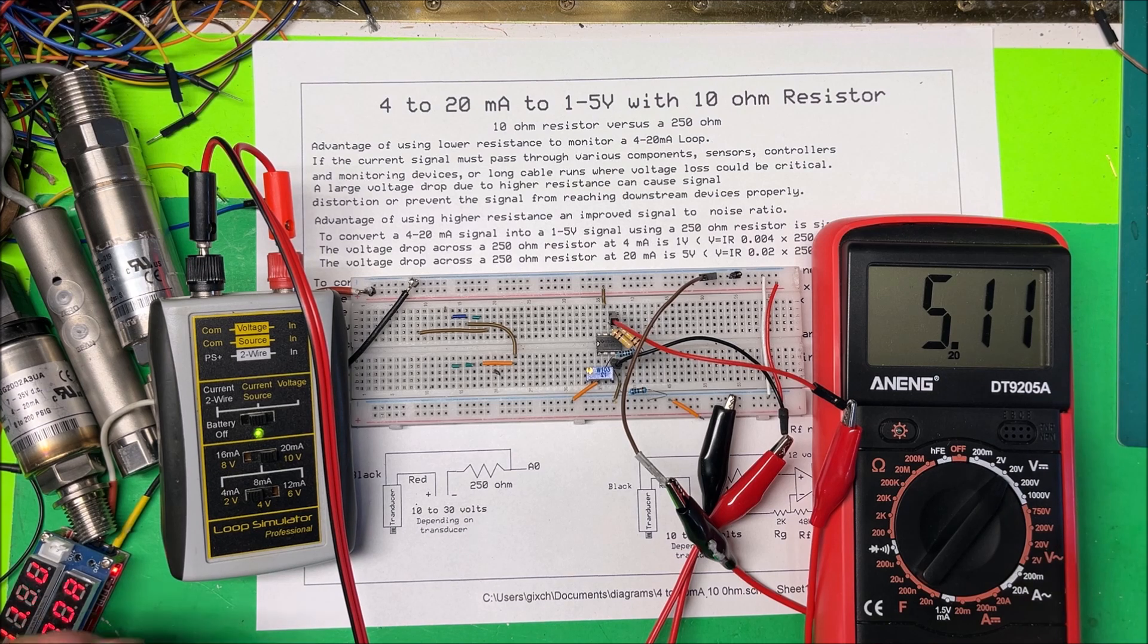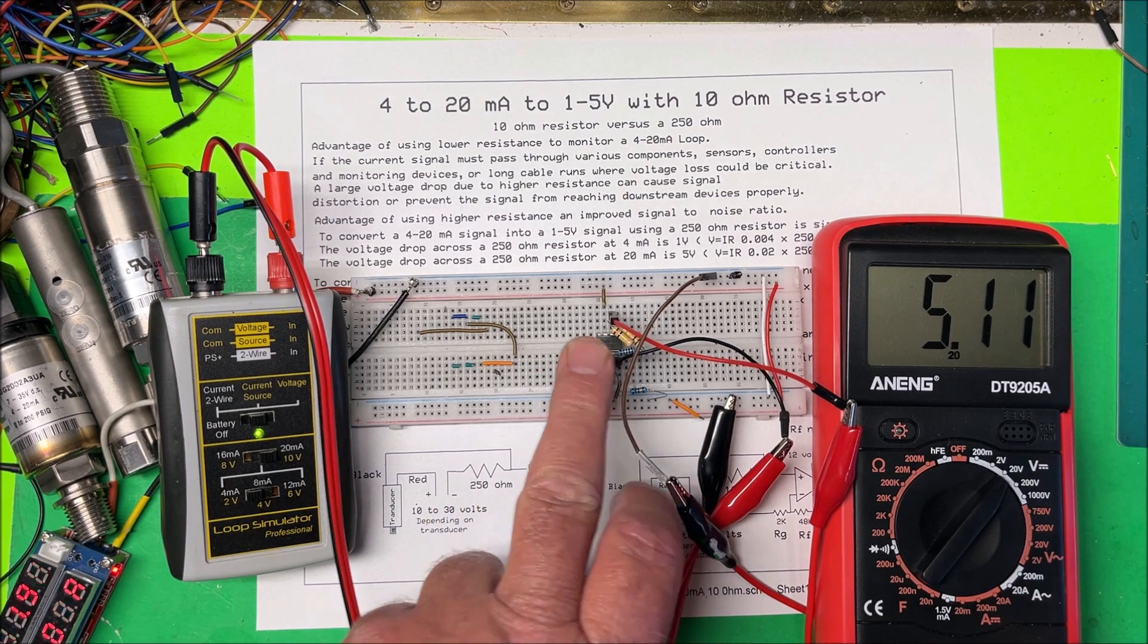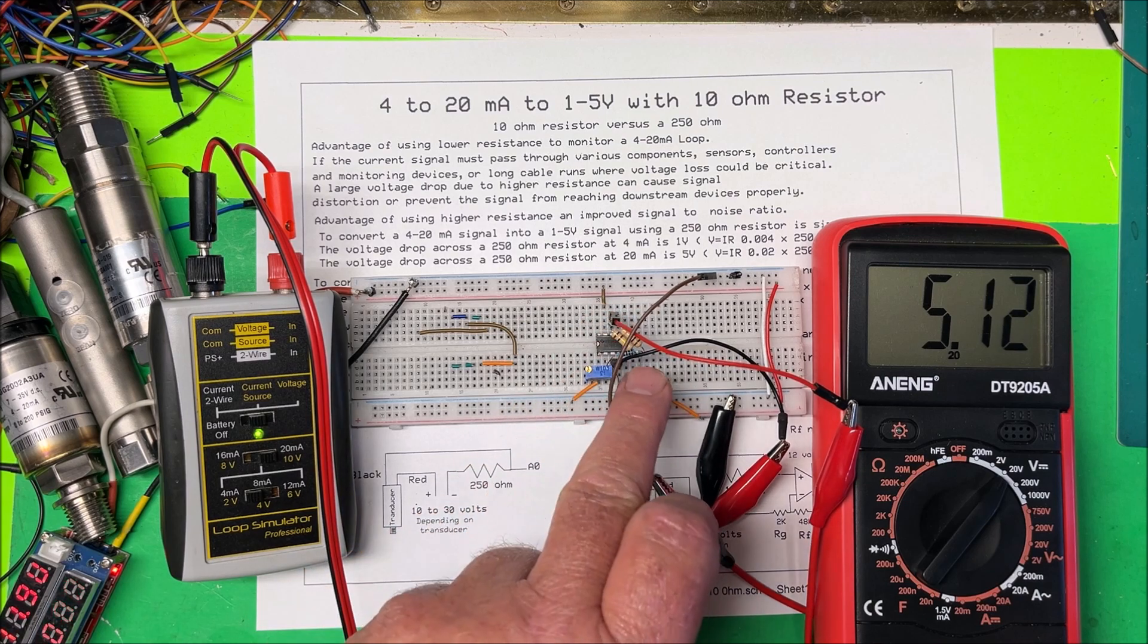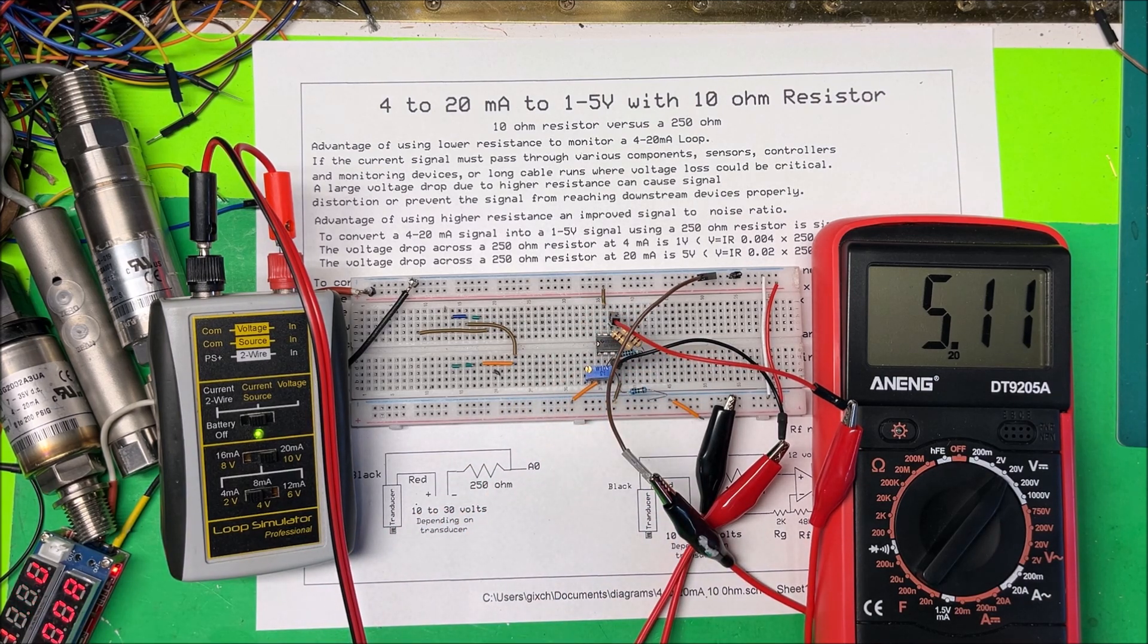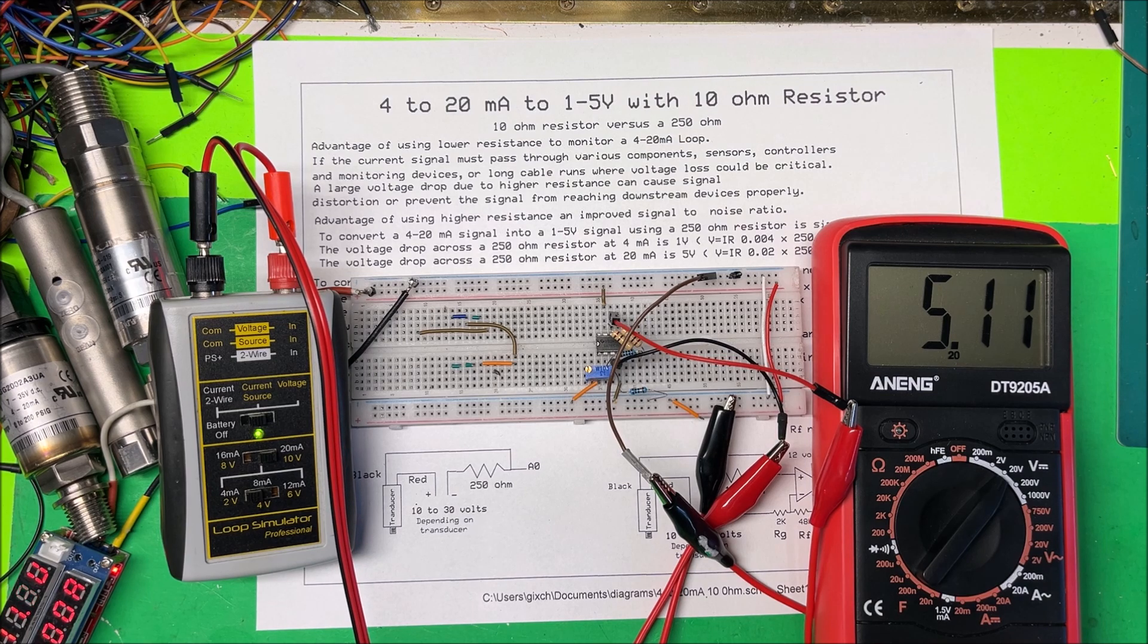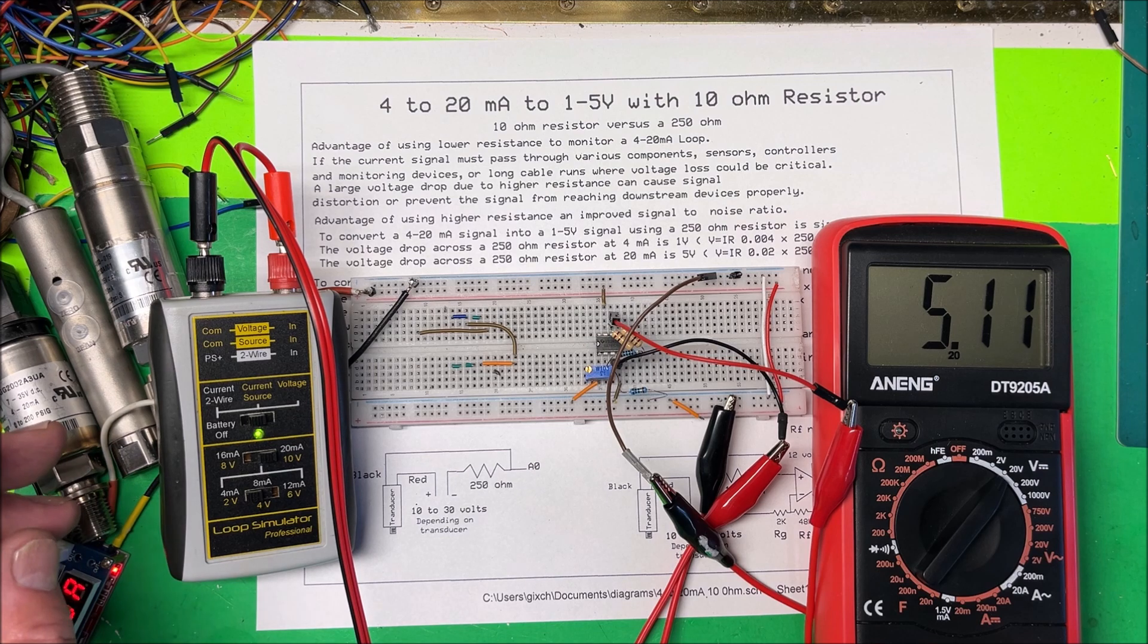So I should have 5 volts. I've got a little over 5 volts. I could turn that down a little bit, I could adjust that, but let's call that 5. And then I'm going to put it to 4 milliamps.